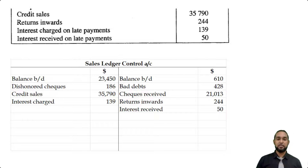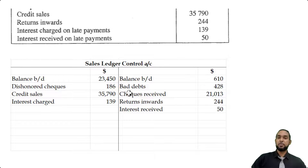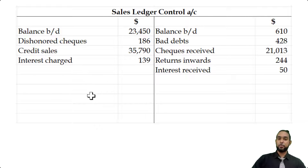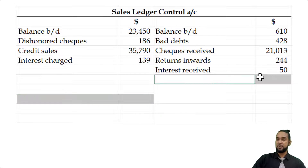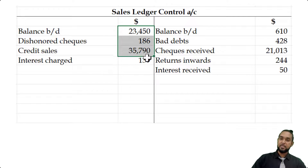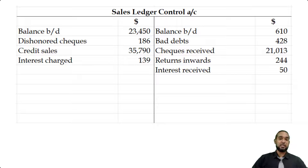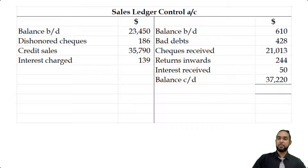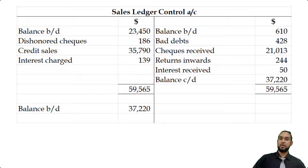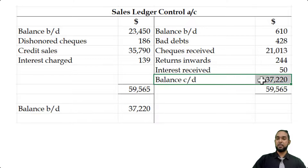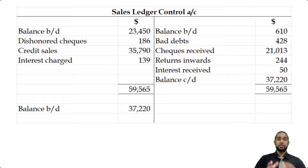We weren't given any closing balances, so we can safely assume there is only a debit balance — if there was a closing credit balance, they would have told us. To find the closing debit balance, we add up the debits, add up the credits, and subtract. The balance is carried down from the credit side and brought down on the debit side, making totals equal on both sides. The closing balance of 37,420 is brought down on the debit side. That's it for part A.